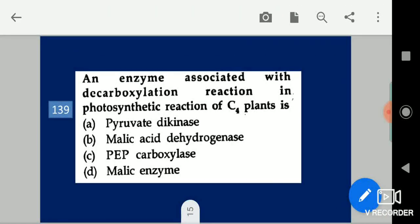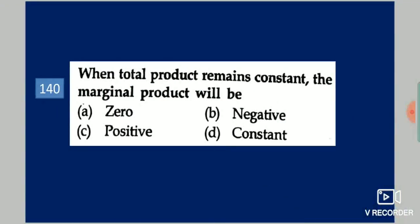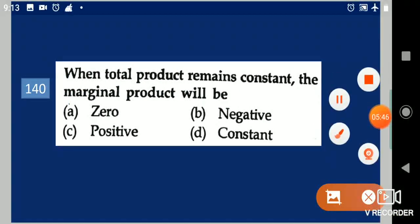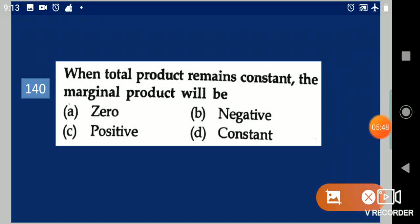Next question: When total product remains constant, the marginal product will be dash. Your options are: zero, positive, negative, constant. Your answer is zero.